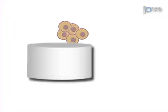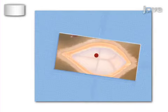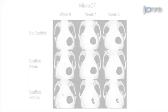The final step is the creation of a critical-sized calvarial defect in a murine model, into which the scaffolding and cells are placed.